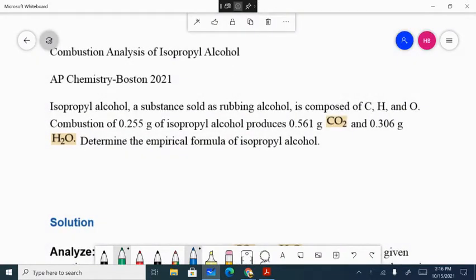My problem states: isopropyl alcohol, a substance sold as rubbing alcohol, is composed of carbon, hydrogen, and oxygen. Combustion of 0.255 grams of isopropyl alcohol produces 0.561 grams of carbon dioxide and 0.306 grams of water. Determine the empirical formula of isopropyl alcohol.